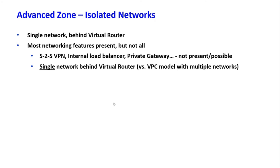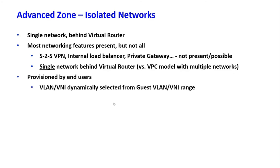With isolated networks, the virtual router protects your network — similar to home networking, where PCs and laptops are on a private network connected to a switch, which connects to your ISP router. All VMs are on a private IP range, but the router is connected to both the private and the so-called public network, providing access to the outside world. Features like site-to-site VPN and internal load balancing are not available here — those are available with VPC.